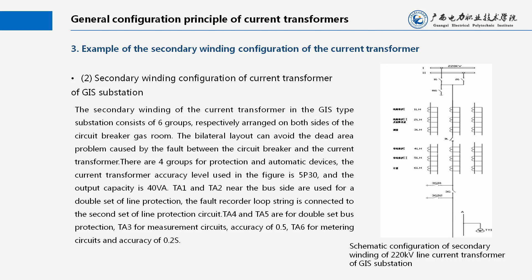Secondary winding configuration of the current transformer of GIS substation: The secondary winding consists of 6 groups, respectively arranged on both sides of the circuit breaker gas room. The bilateral layout can avoid the dead area problem caused by the fault between the circuit breaker and the current transformer. There are four groups for protection and automatic devices. The accuracy level is 5P30 and the output capacity is 40VA. TA1 and TA2 near the bus side are used for double set of line protection, TA4 and TA5 are for double set bus protection, TA3 for measurement circuits with accuracy of 0.5, and TA6 for metering circuits with accuracy of 0.2S.